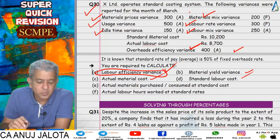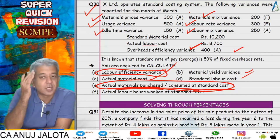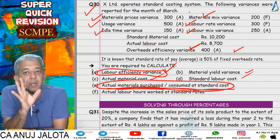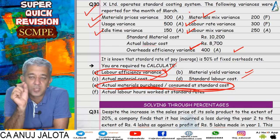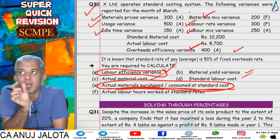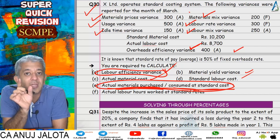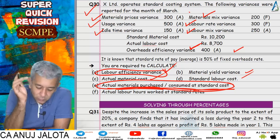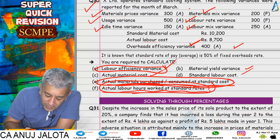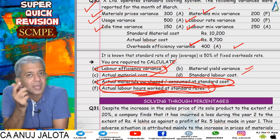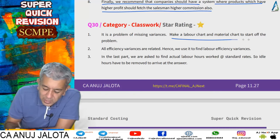Starting from overhead efficiency, we derived labor efficiency variance, then used our notes on how efficiency variances are connected. Labor sub-efficiency variance plus labor mix gives labor efficiency variance. All the remaining things were straightforward. For the last parts, we needed actual materials purchased or consumed at standard cost, so we used the material price variance formula: standard price minus actual price, multiplied by actual quantity. Opening brackets gives standard price × actual quantity minus actual price × actual quantity.